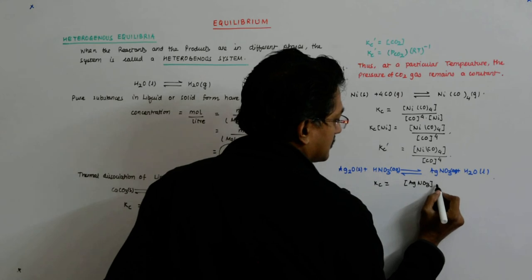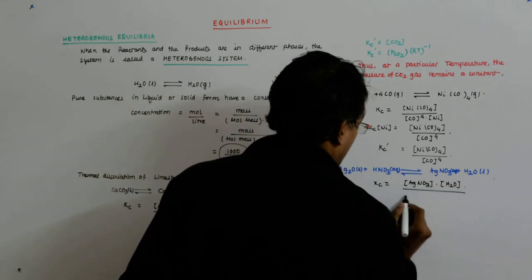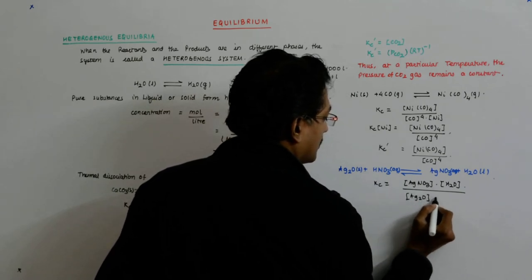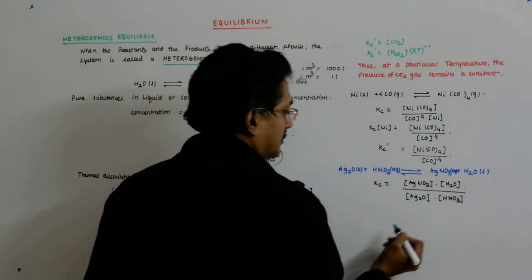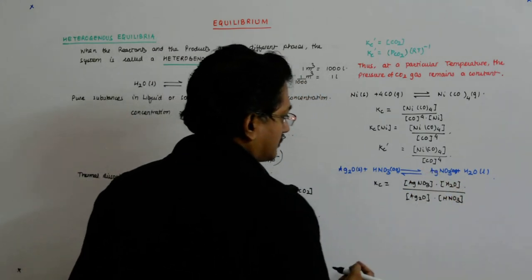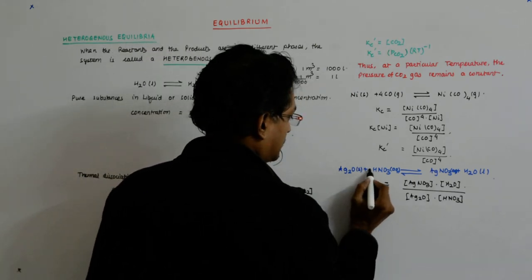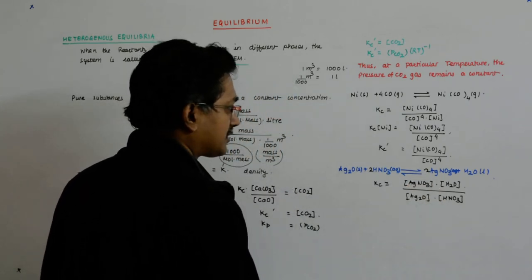AgNO3 into concentration of H2O upon Ag2O into HNO3, not yet balanced. Is it balanced now?